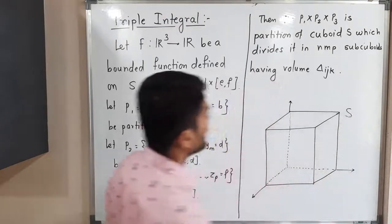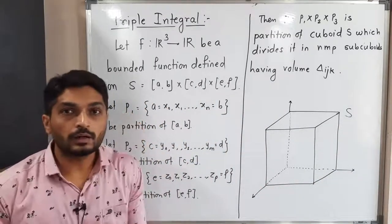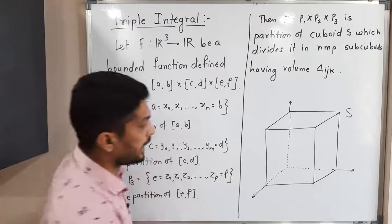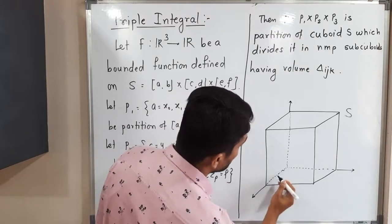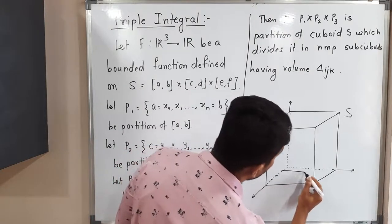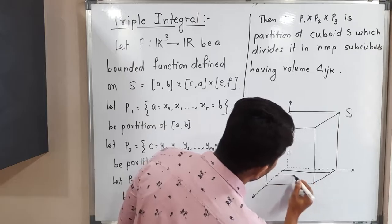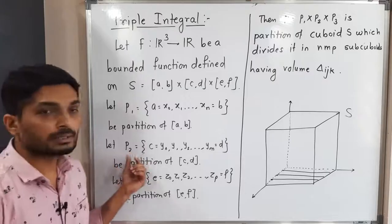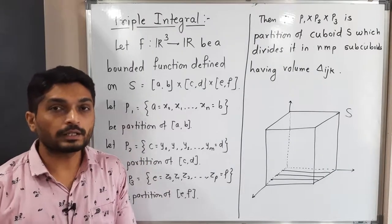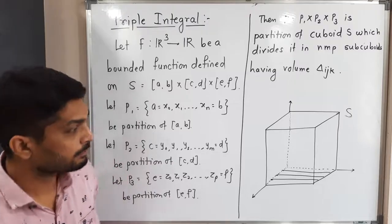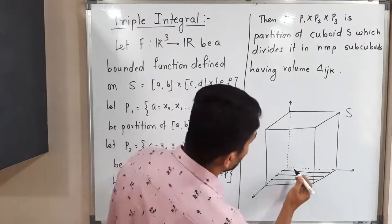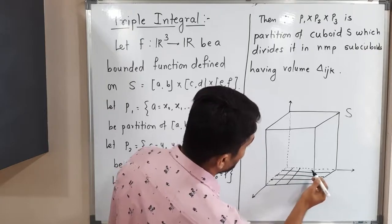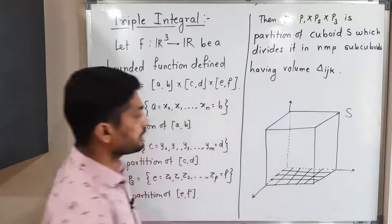We call this cuboid S. We take a partition P1 of the closed interval [a,b], giving us a partition along the x-axis, dividing the region along x. Then we take P2, a partition of the closed interval [c,d], giving us a partition along the y-axis.